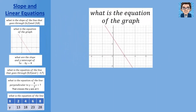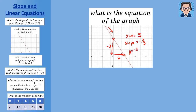Problem two: find the equation of a line from a graph. We need the y-intercept and the slope. The y-intercept is right there at 3. The slope goes downward, so we know it's negative. To get from one point to the other we go down 3 and over 2, so our slope is negative 3 over 2. Our equation is y equals negative 3 over 2 x plus 3.